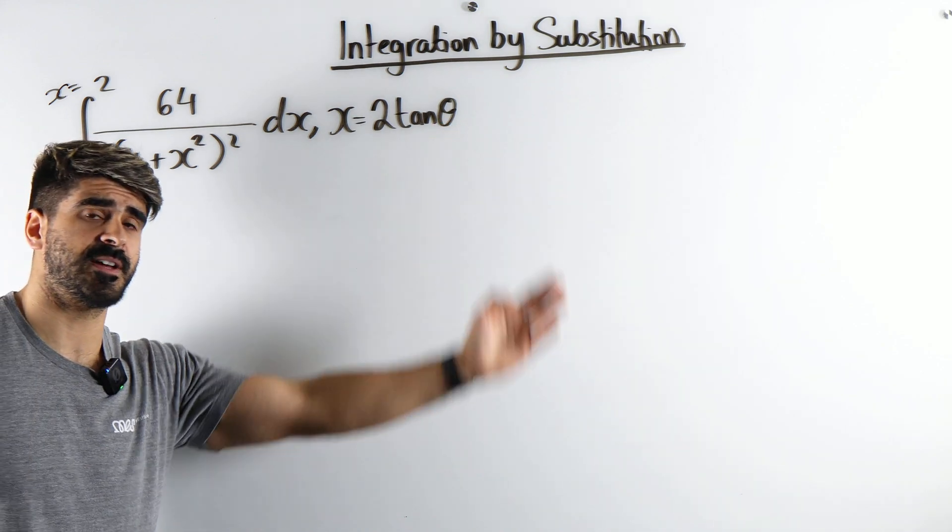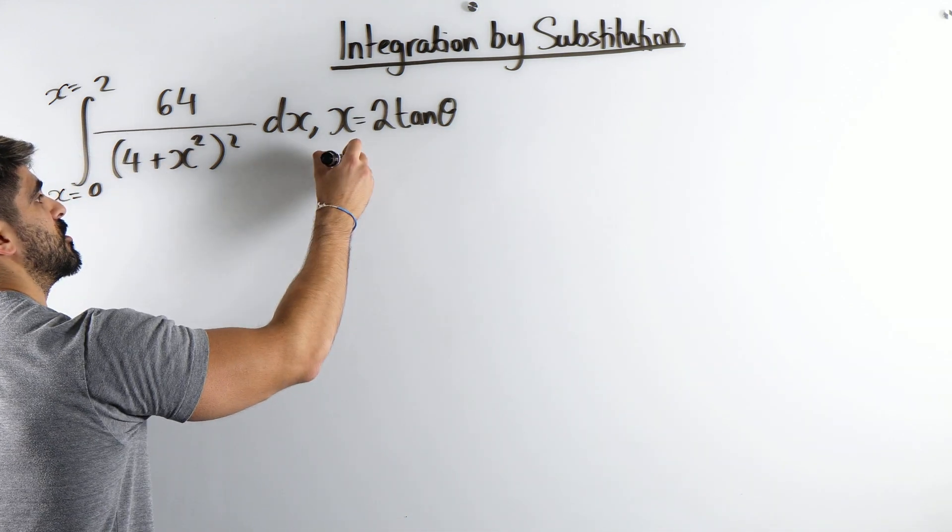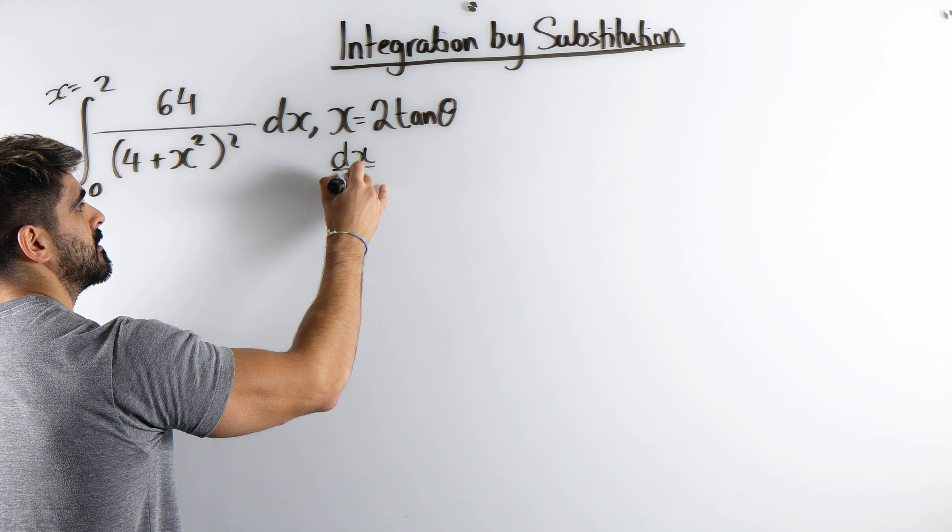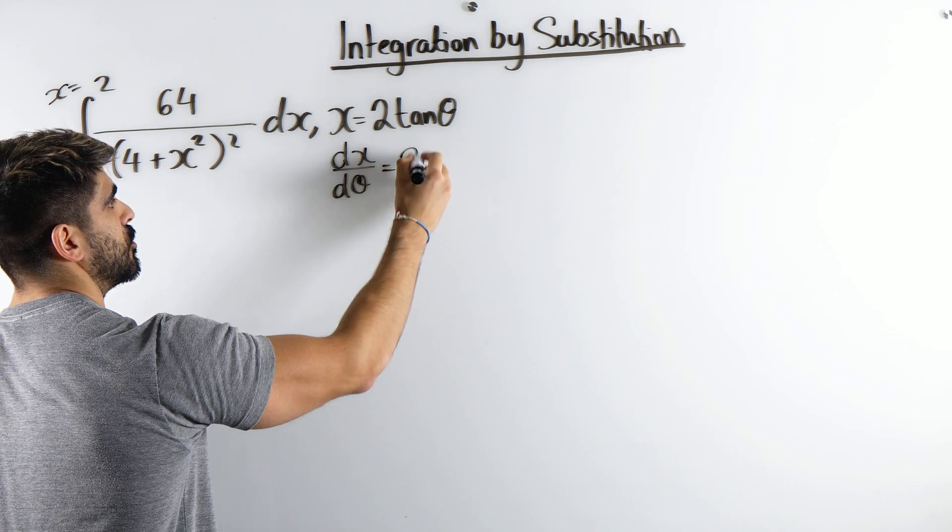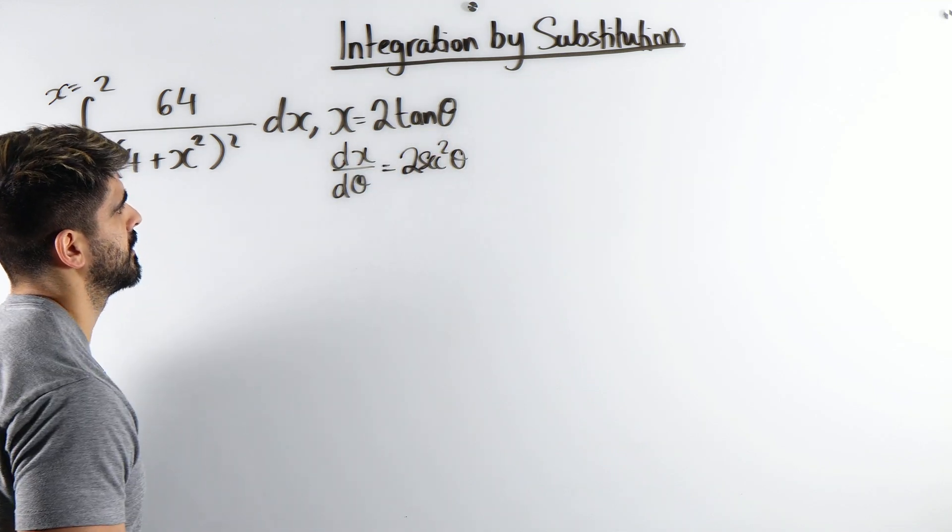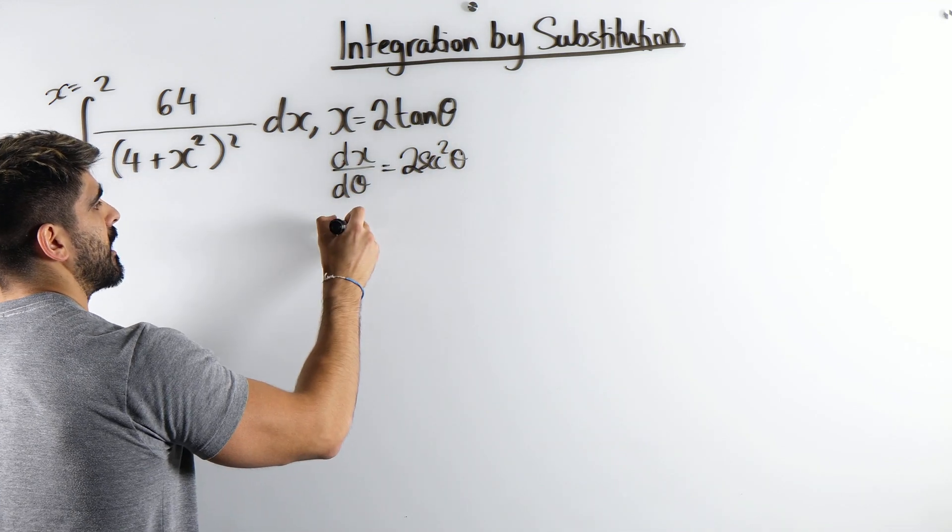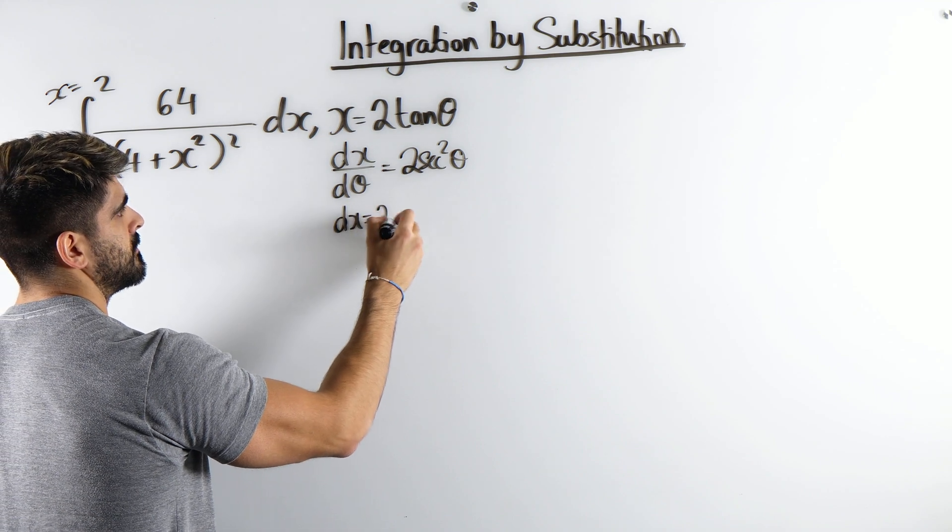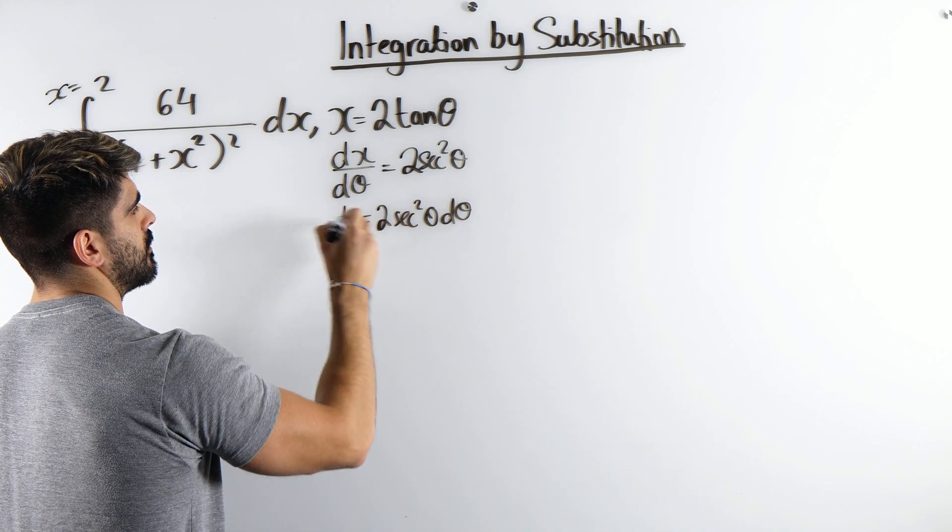To change dx into d theta, we're going to differentiate this. So we get dx by d theta is 2 tan differentiates to sec squared. So we times through by d theta.